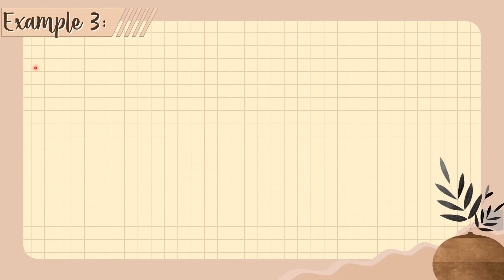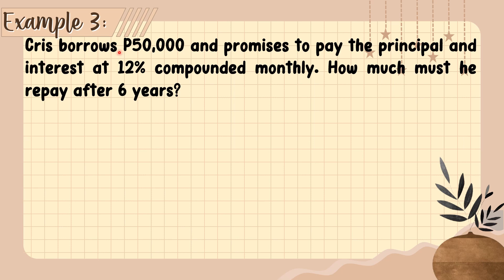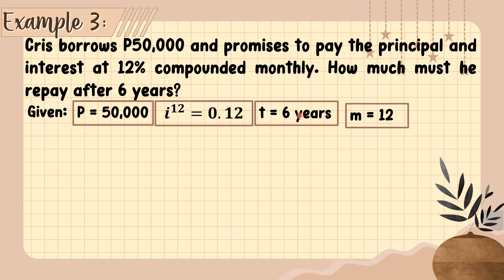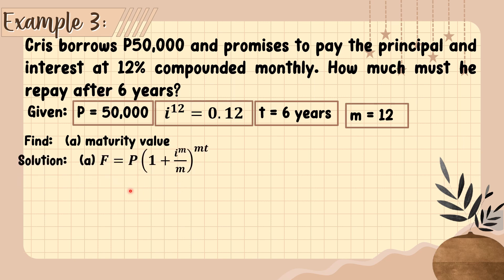Let's have Example 3. Grace borrows 50,000 pesos and promises to pay the principal and interest at 12% compounded monthly. How much must she repay after 6 years? Given: principal = 50,000; I sub 12 = 0.12; T = 6 years; M = 12 (compounded monthly, 12 months in a year).